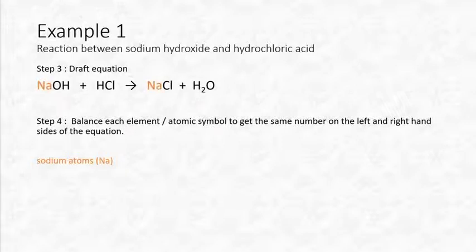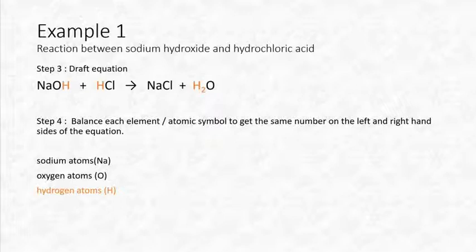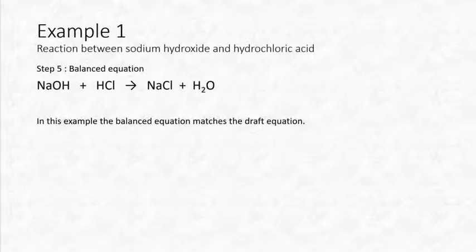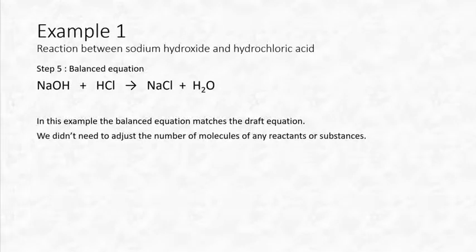Sodium: one on the left, one on the right — balanced. Oxygen: one on each side — balanced. Hydrogen: two on the left (one in NaOH, one in HCl) and two on the right in H₂O — balanced. Chlorine: one on each side — balanced. All atoms balance, so our final balanced equation is exactly the same as our draft equation. We didn't need to adjust the number of molecules of any substance.